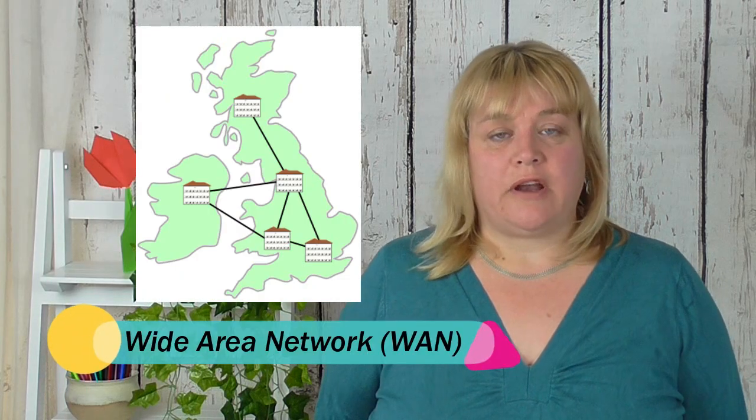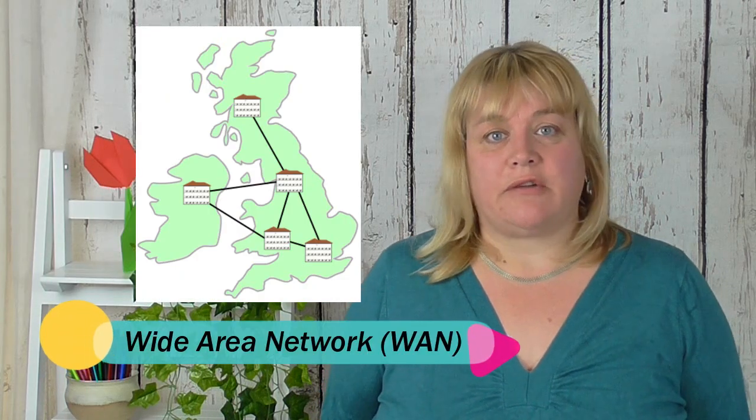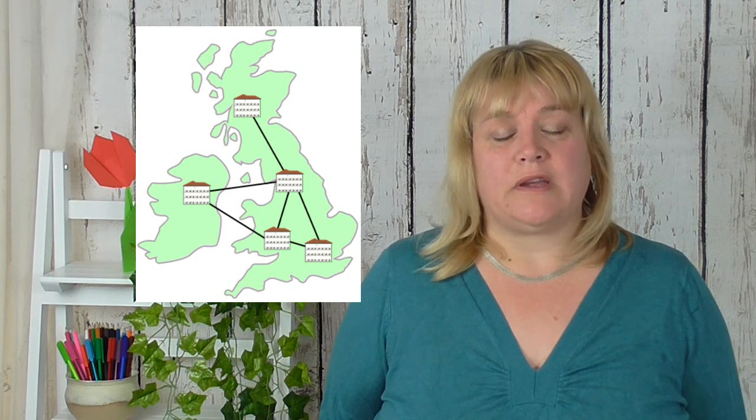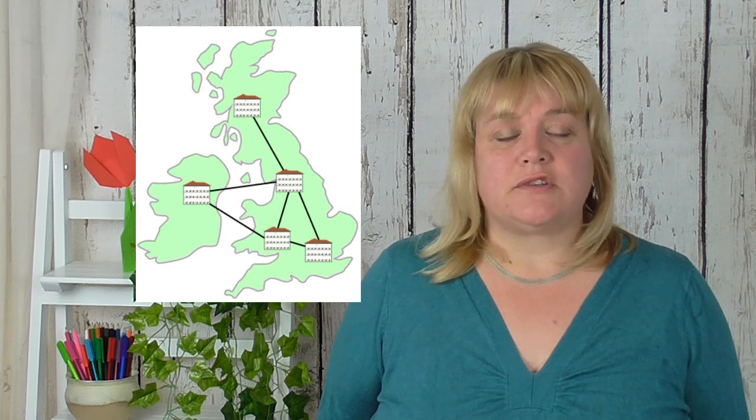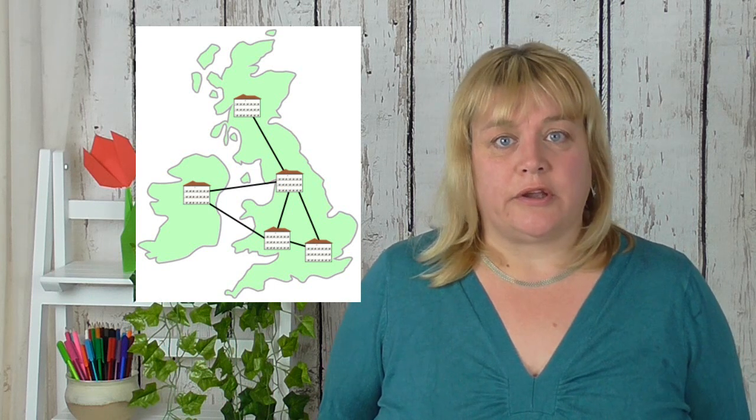A WAN or wide area network is over a much larger geographic area. Now this could be owned by a single organization such as an international bank, but more commonly they're using lots of different networks to control one larger network. The internet is the largest WAN in the world and that's not controlled by anyone in particular.